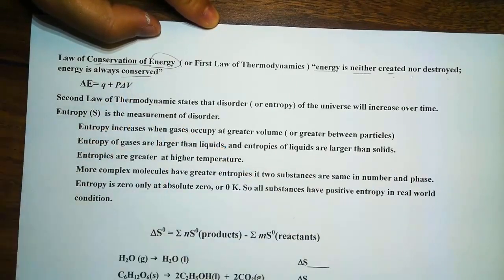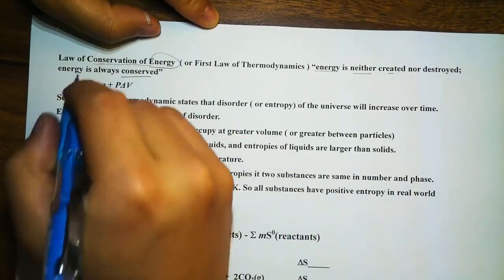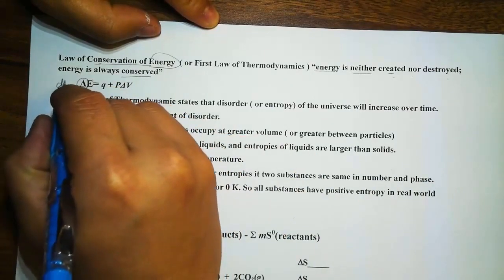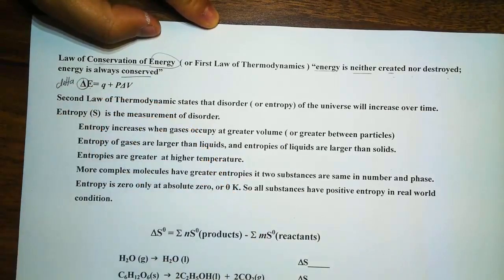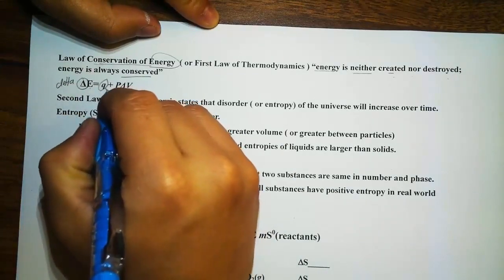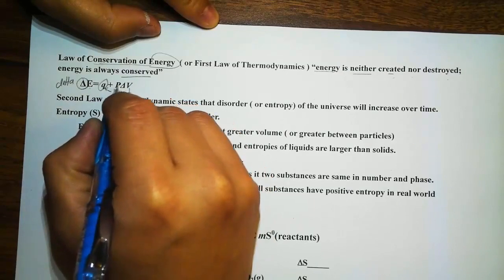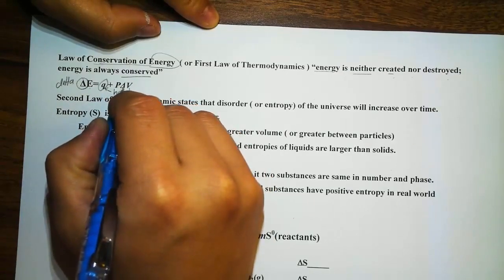Now if we look at the changes in energy, which is right here, delta. So this is the delta symbol, represents changes. And the change in E, which is energy, is always equal to Q. And we know that Q is equal to heat. But what is pressure times the changes in volume?